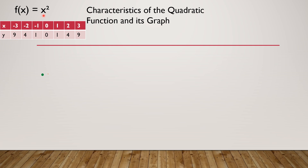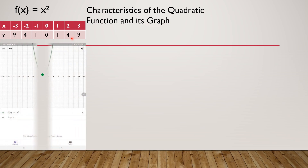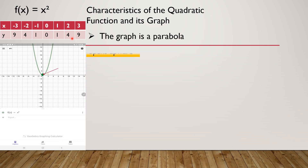Negative 2 squared is 4. Negative 1 squared is 1. That's how you construct the table of values — if you don't know how, I have a video on this. Now, this is the graph of the quadratic function f(x) = x². It is a parabola that opens upward.